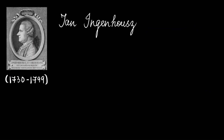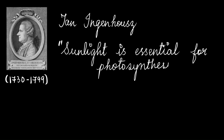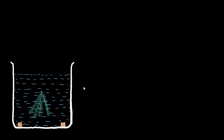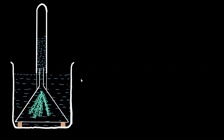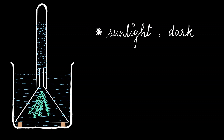The next scientist is Jan Ingenhaus, who discovered the importance of sunlight for the process of photosynthesis. He used an experimental setup similar to that of Priestley: he took a glass beaker filled with water, placed spacers at the bottom, and put a piece of plant into the water. This piece was covered by a glass funnel, which was in turn covered by a glass test tube. This setup was then placed in two conditions — one in sunlight and the other in the dark.